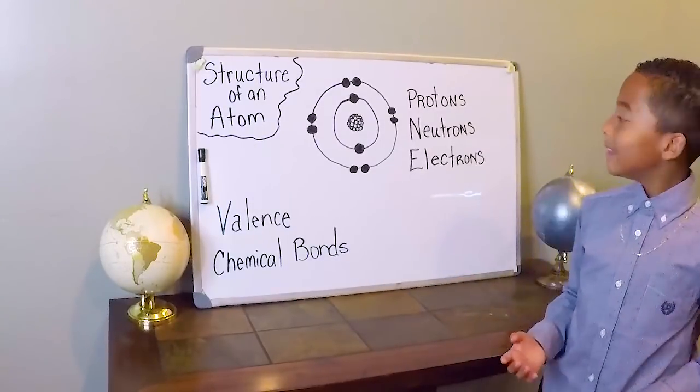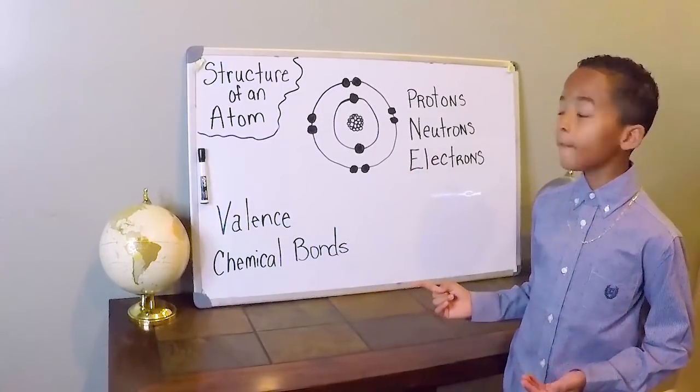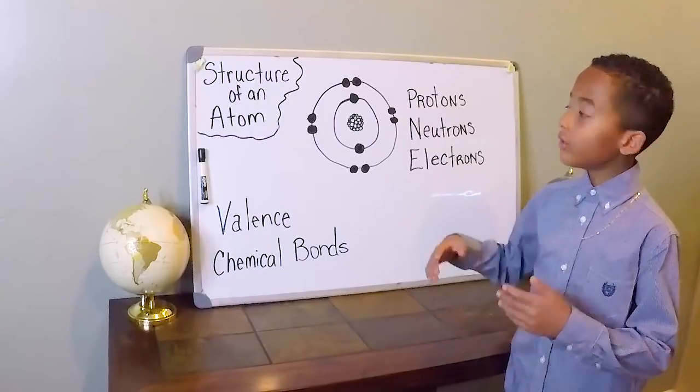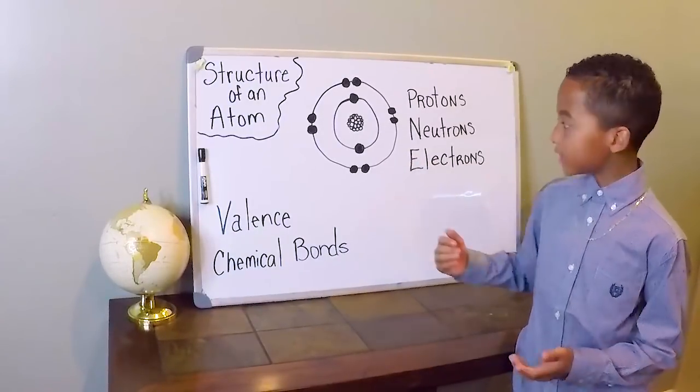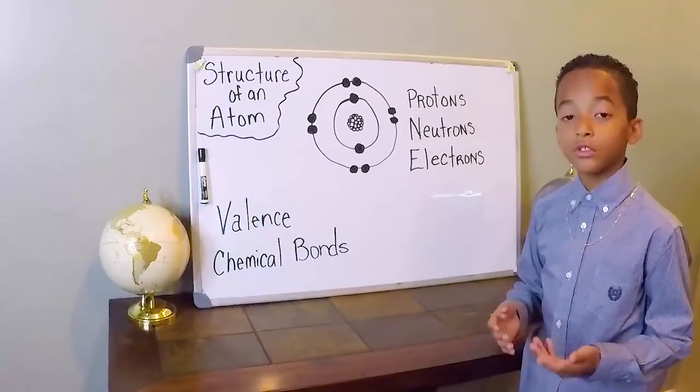So basically, if you want to make a chemical bond you have to know that on the first shell you have two electrons and on the second shell you fit eight electrons. There's more shells but today we're just going to be talking about the first two shells.